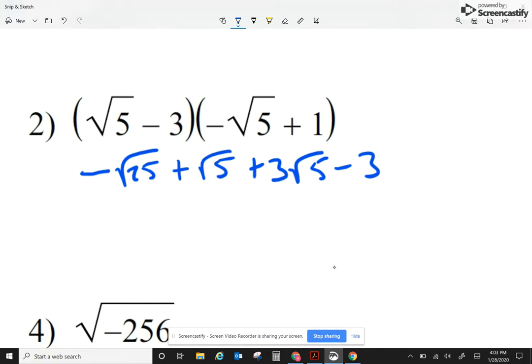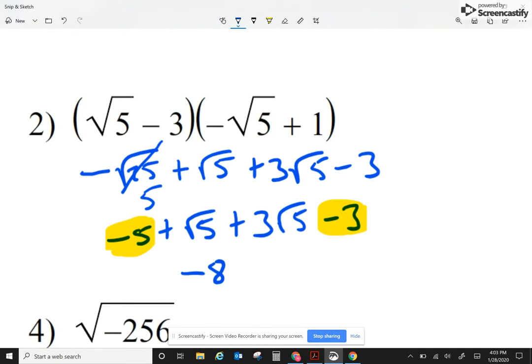Now at the very beginning, square root of 25 basically becomes a 5, so I have minus 5 plus square root of 5 plus 3 square root of 5 minus 3. I'm going to combine like terms, so that gives me negative 8. On these two, they have the same radical. Technically I have a 1 in front of these, so I'm going to write this plus 4 radical 5.